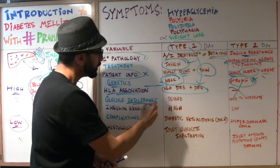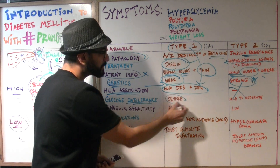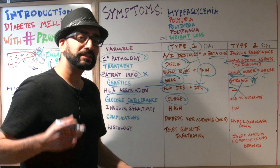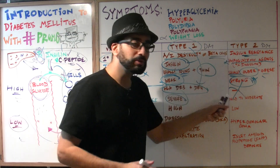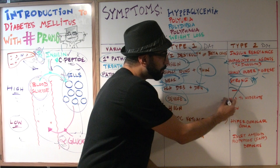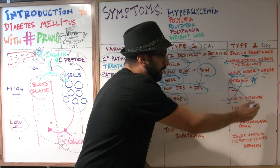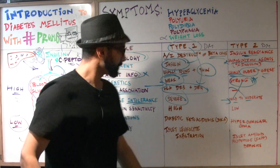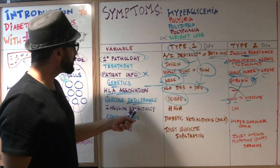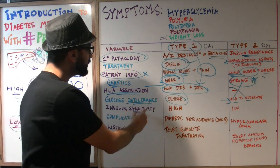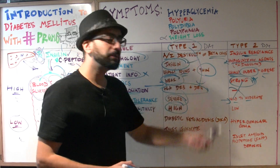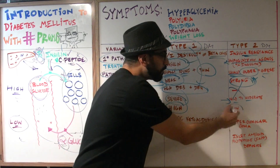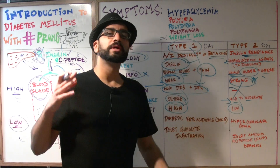Glucose intolerance for type 1 diabetics is very severe, whereas for type 2 diabetes it is mild to moderate. And regarding insulin sensitivity: it is very high for type 1 diabetes and low for type 2 diabetes.